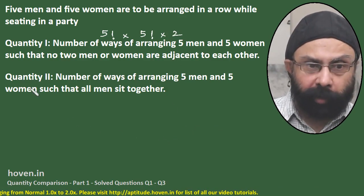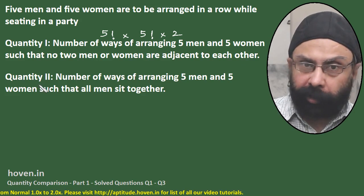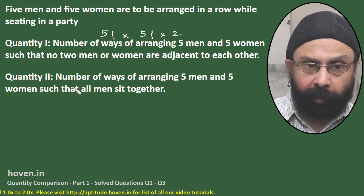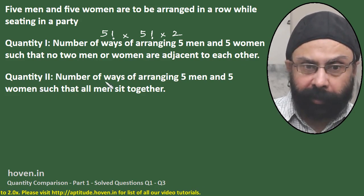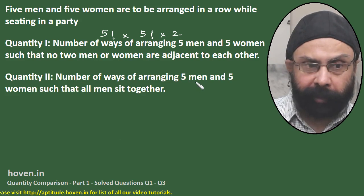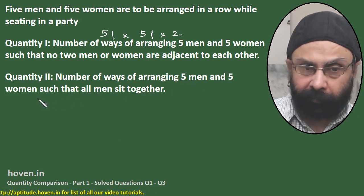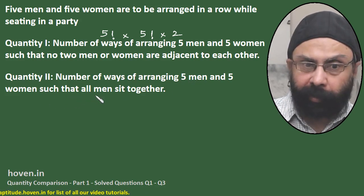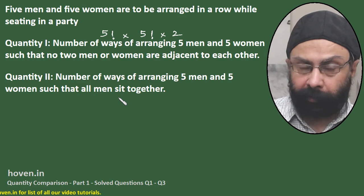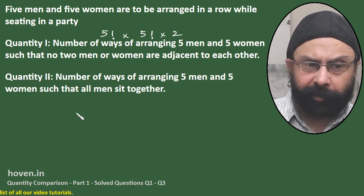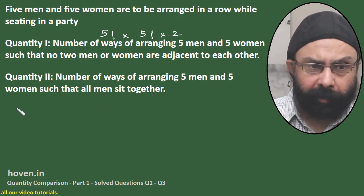Now let us talk about Quantity 2: the number of ways of arranging 5 men and 5 women such that all men sit together. This is not as tough as it appears.